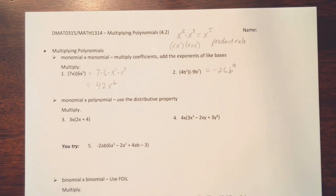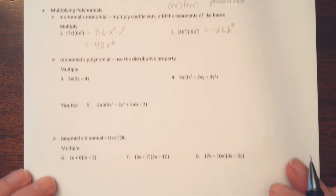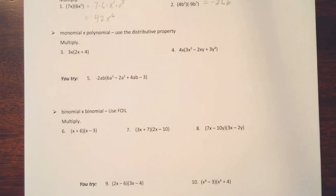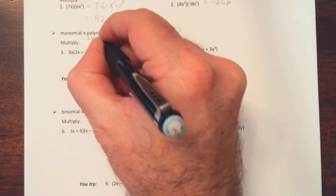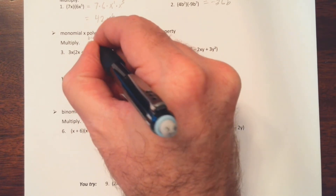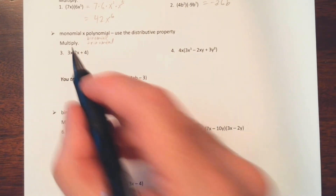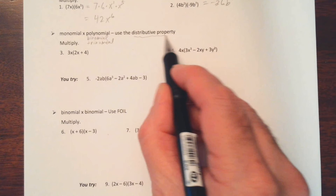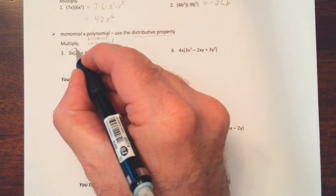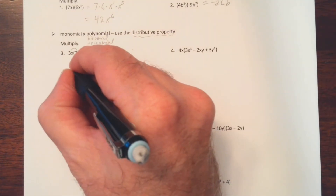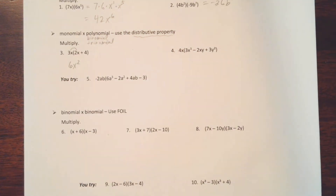We've done this before but we're making it a little more formal, and we'll run into some problems that are a little more challenging. Next we'll look at a monomial times a polynomial — specifically a binomial or a trinomial are the most common. Notice here we have a monomial times a binomial, and this is just where we use the distributive property.